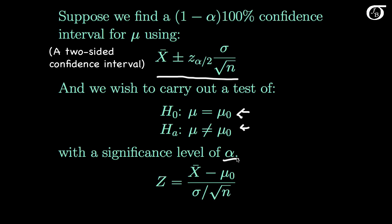We would typically go ahead and use our z-test statistic, come up with a p-value, and draw a conclusion. But I could tell you what that conclusion would be by looking at the confidence interval, because there is a relationship between confidence intervals and hypothesis tests.